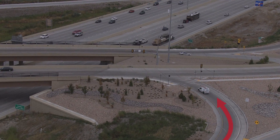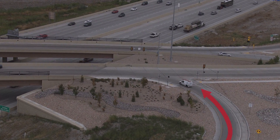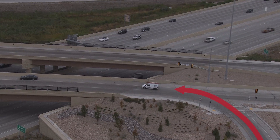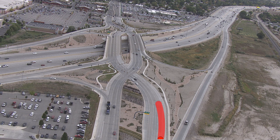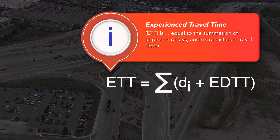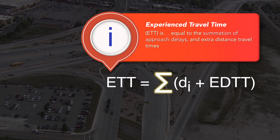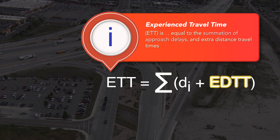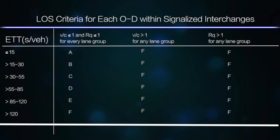At DDIs, extra distance travel time is applicable to left turners from the freeway and to arterial through movements affected by both crossovers. Experienced travel time is equal to the summation of approach delays and extra distance travel times. Facility-wide level of service is based on the average amount of experienced travel time per vehicle.